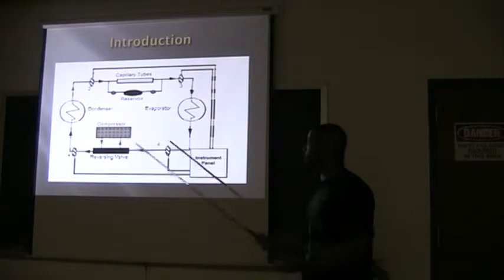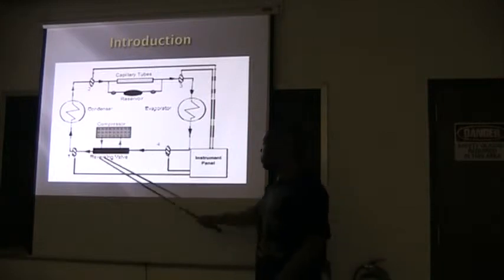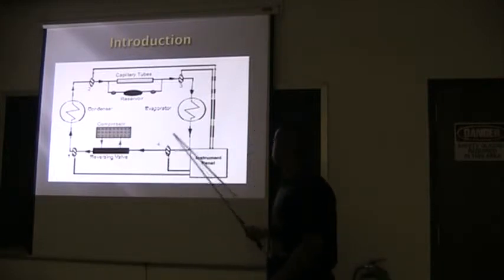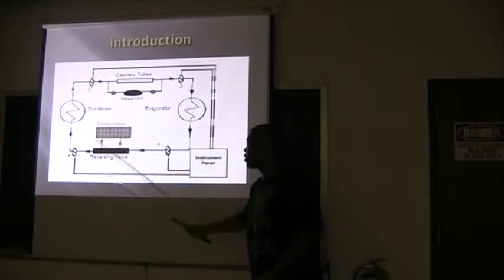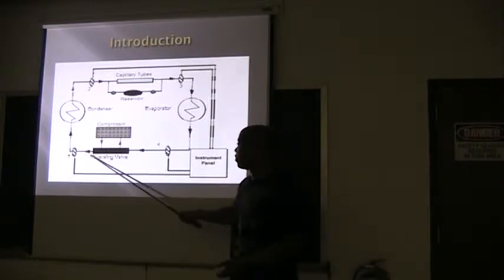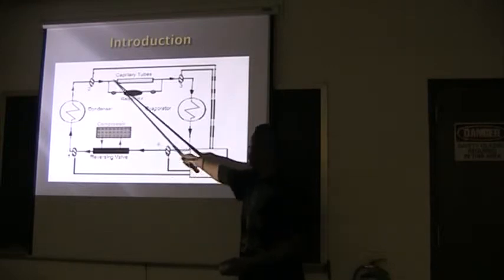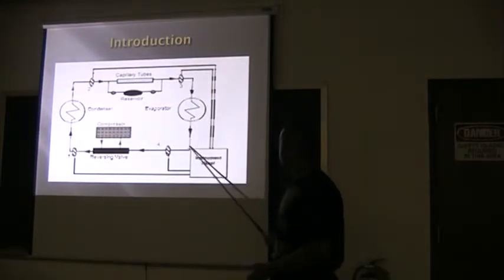I'm just going to start you off with a basic introduction of the schematic of the experimental apparatus. As you can see here, these points right here are going to be temperature and pressure measuring devices, and the refrigerant fluid is going to flow up here through the condenser, and then here through the capillary tube, down through the evaporator, and then the PV panel.